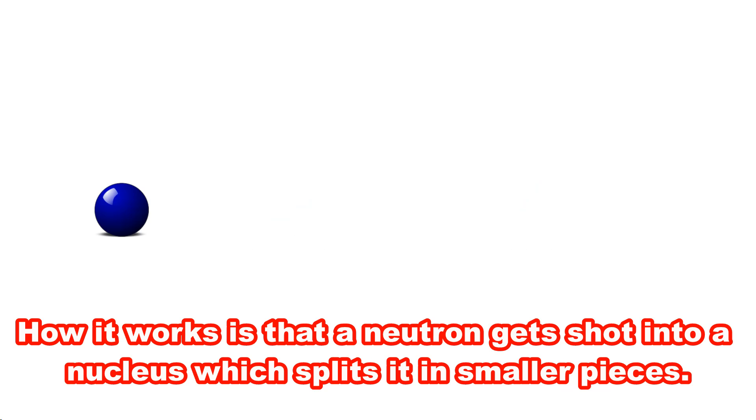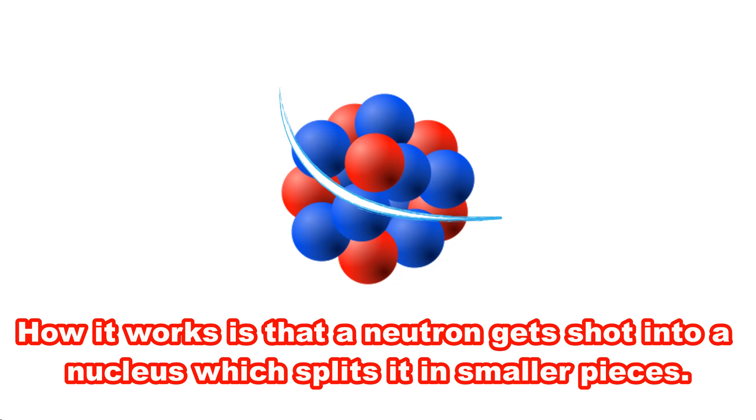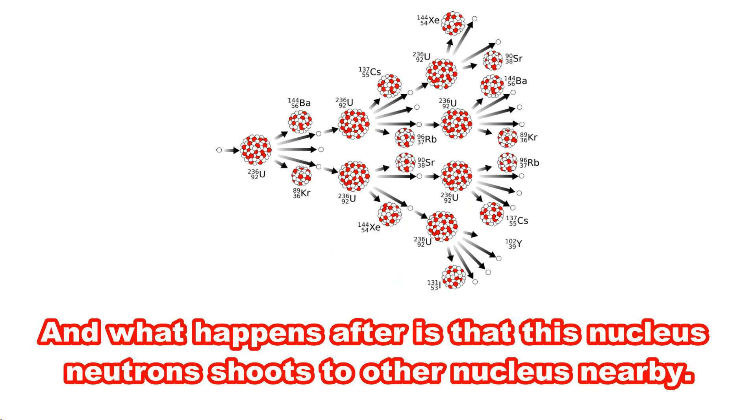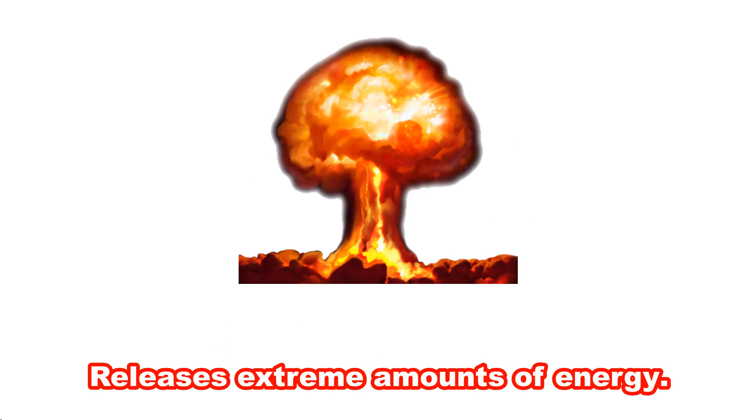How it works is that a neutron gets shot into a nucleus which splits it into smaller pieces. What happens after is that this nucleus's neutrons shoot to other nuclei nearby. This causes a chain reaction which after a few splits of the nucleus releases extreme amounts of energy.